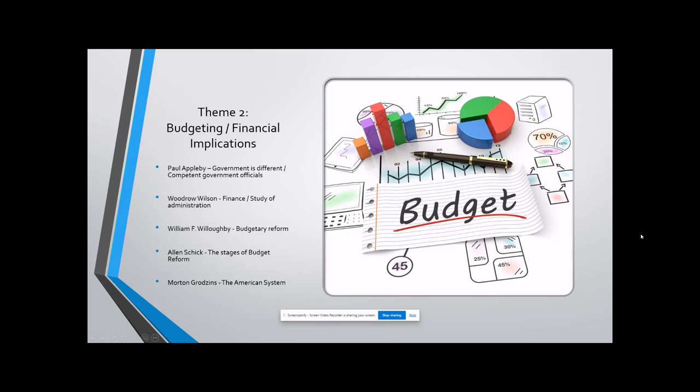So my second theme is budgeting and financial implications. I used Applebee's the government is different here again, because I believe that carving out the budget for this, which is very expensive body cameras on all officers running for the entirety of their shifts. There's analysis that comes with that. There's constant monitoring. There's probably going to be different positions that come out of this. And just creating a budget for that comes through competent government officials and just even pushing the idea through to fruition comes through competent government officials.